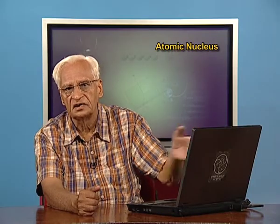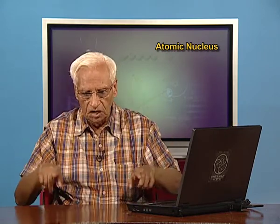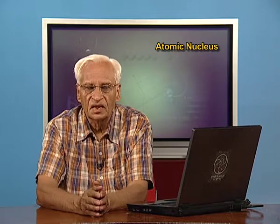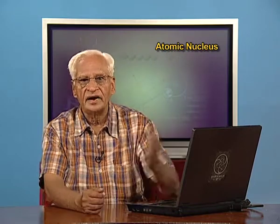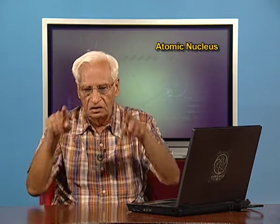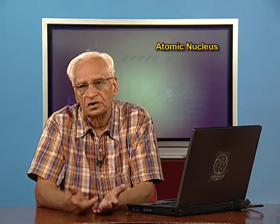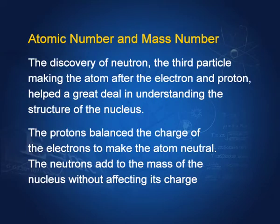I have already hinted at atomic number and mass number. Mass number is the total number of nucleons inside the nucleus, and atomic number is equal to the number of protons in the nucleus — that is, the charge of the nucleus. These two quantities we shall make use of when we do nuclear reactions.